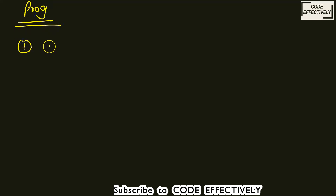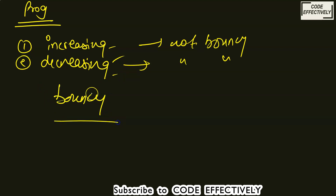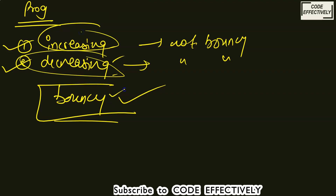For the program methodology, first I will check whether the number is increasing. If it is increasing, we can say it is not bouncy. If it is not increasing, then we will check for decreasing. If it is decreasing, then also we can say it is not bouncy. And if both conditions are false — the number is neither increasing nor decreasing — then we can say it is a bouncy number. So I need to make two methods: one for checking increasing and one for checking decreasing. If both return false, then it is a bouncy number.